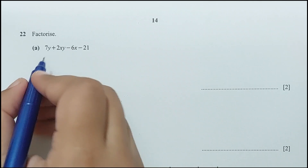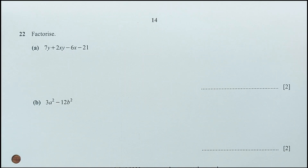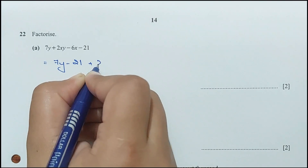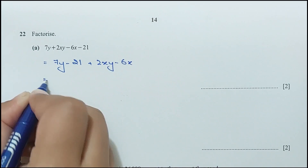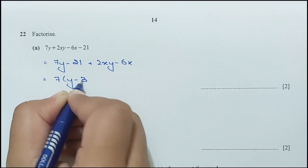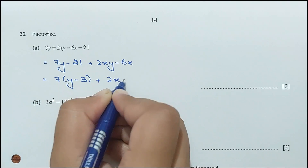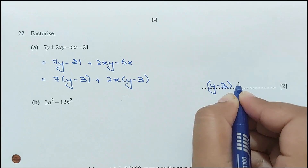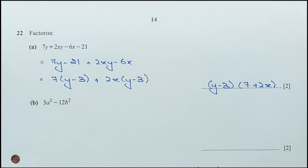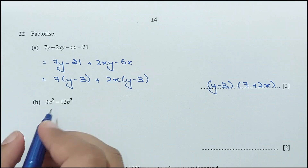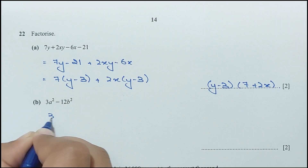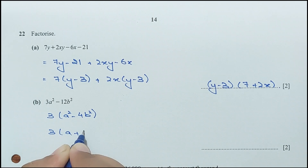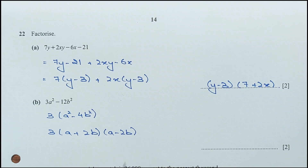Question 22 part A: factorize 2xy − 6x + 7y − 21. Rearranging: 7y − 21 + 2xy − 6x. Taking 7 common from first pair: 7(y − 3), and 2x common from second pair: 2x(y − 3). So the factors are (y − 3)(7 + 2x). Part B: factorize 3a² − 12b². Taking 3 common gives 3(a² − 4b²). Using difference of squares: 3(a + 2b)(a − 2b).